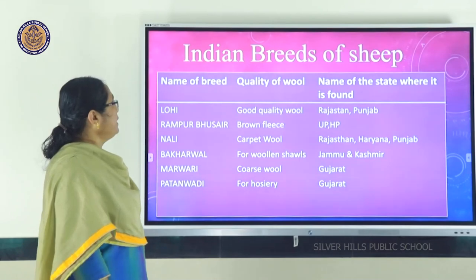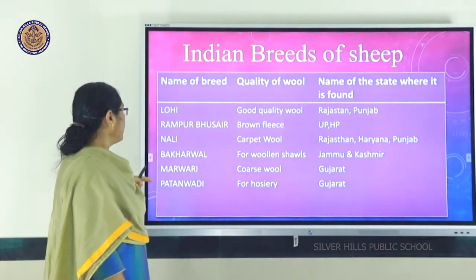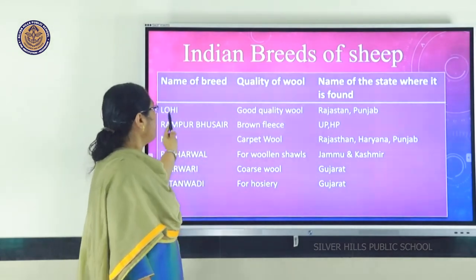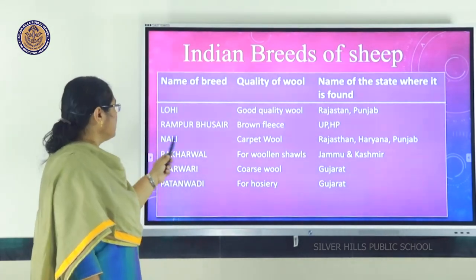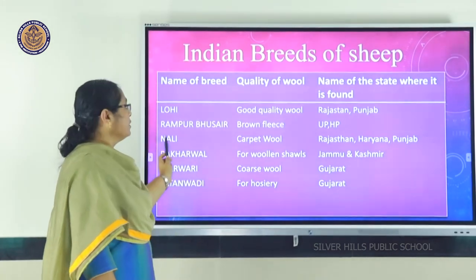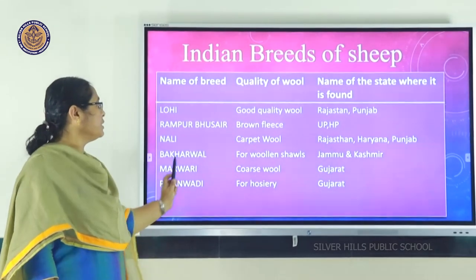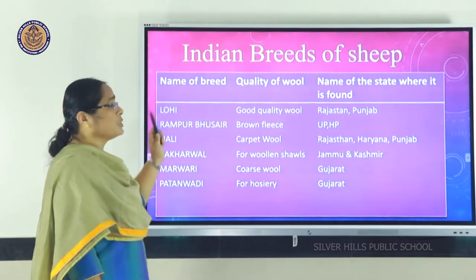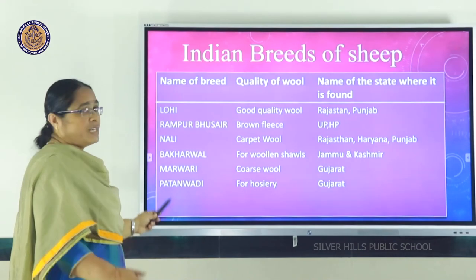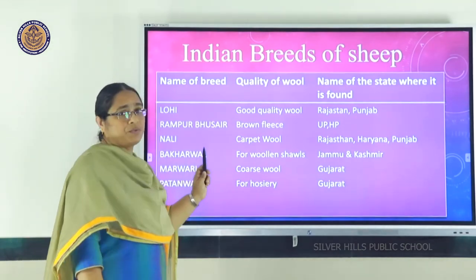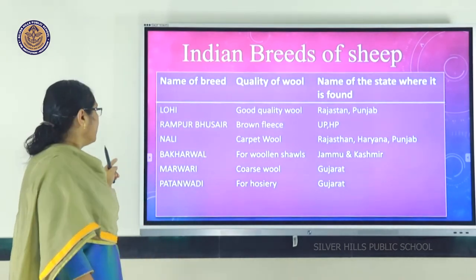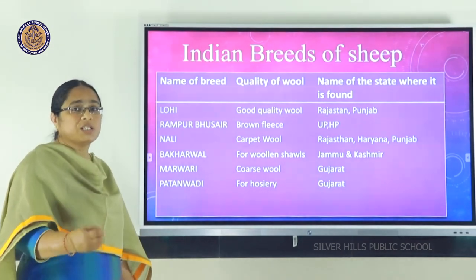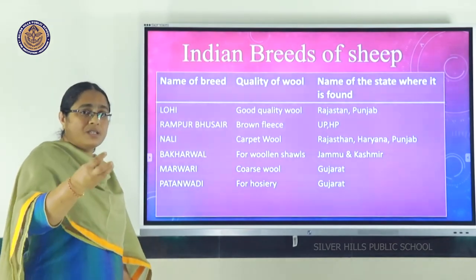Indian breeds of sheep include Lohi, Rampur Bushair, Nali, Bakharwal, Marwari, and Patanwadi. Lohi, found in Rajasthan and Punjab, gives good quality wool. Rampur Bushair, found in Uttar Pradesh and Himachal Pradesh, gives brown fleece. Nali, found in Rajasthan, Haryana, and Punjab, gives carpet wool — coarse and rough. Bakharwal, found in Jammu and Kashmir, is used for woolen shawls. Marwari, found in Gujarat, gives coarse wool. Patanwadi, also in Gujarat, gives soft wool used for making hosiery — stockings, vests, and briefs.